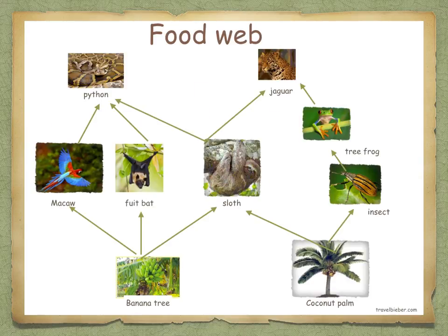Moving on to a food web: in reality, most animals do not rely upon one single food source. Within a single habitat, many food chains will be linked together to form a food web. You may notice that a particular animal does not always occupy the same position in a food chain.